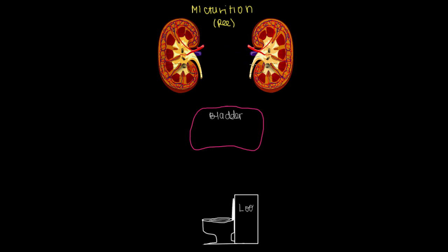Beginning where we left off in the kidney — after we concentrate urine in our nephrons, we have a part that touches the tip of the renal medulla. That's our renal calyx. The renal calyx is the first part to collect urine from the collecting tubules. Several renal calyces coalesce together into the renal pelvis.